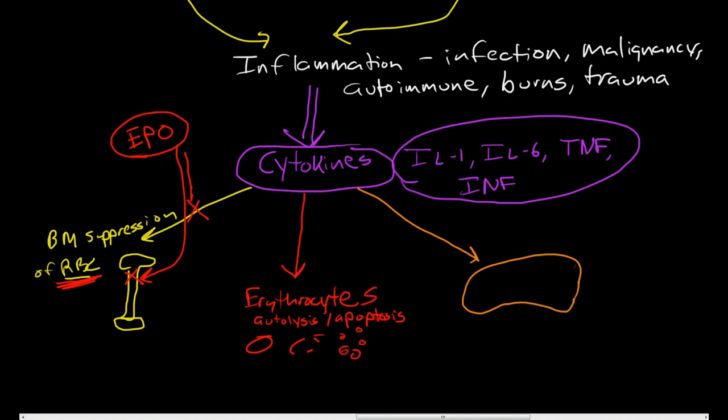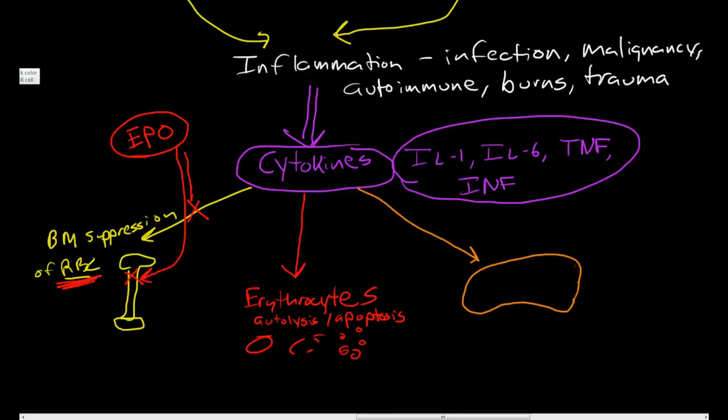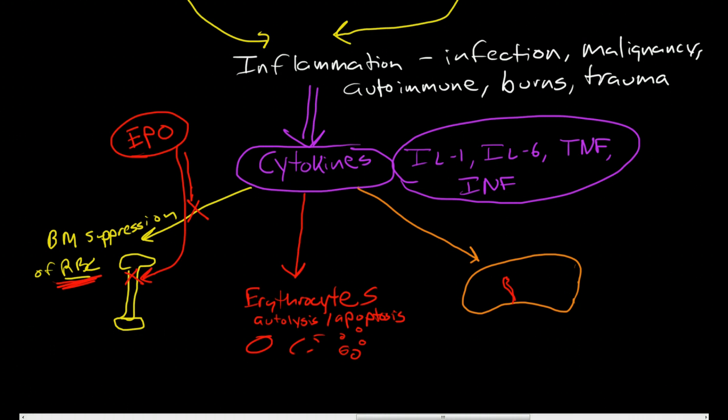Remember the spleen is made up of red pulp and white pulp, and in the red pulp we have the blood flowing from little arterioles to the veins through the red pulp. The red pulp is filled with macrophages.